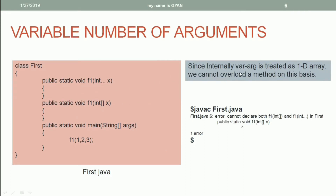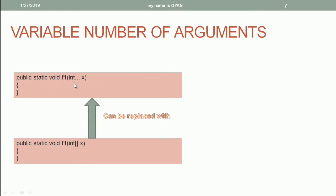Since a variable number of arguments is internally treated as a one-dimensional array, we cannot overload a method on this basis. Two methods in the same class cannot have the same name and same signature. Since varargs is treated the same as an integer array, the compiler will throw an error: cannot declare both methods in class first. However, we can use a variable number of arguments in place of an array argument.